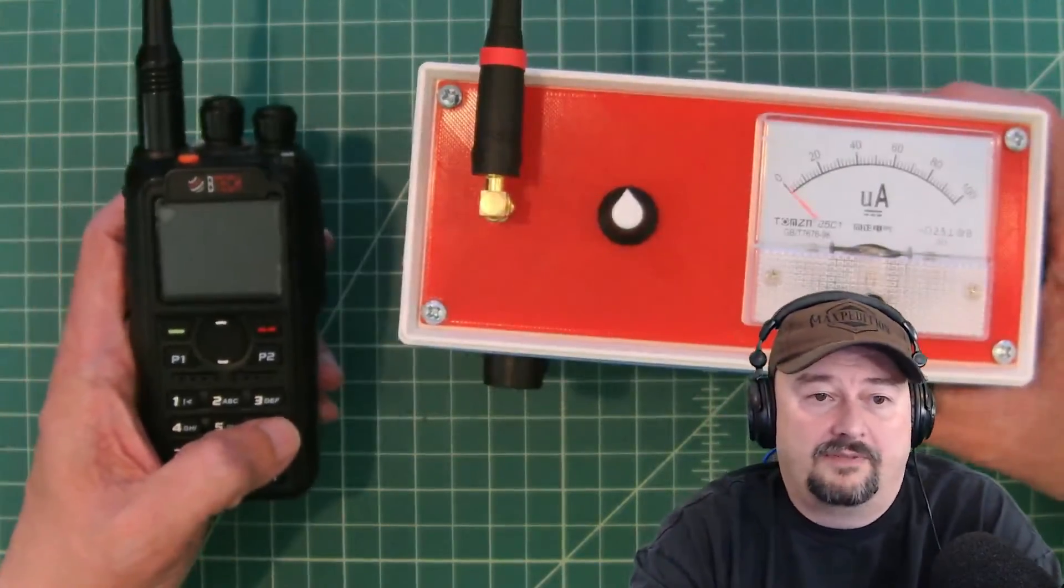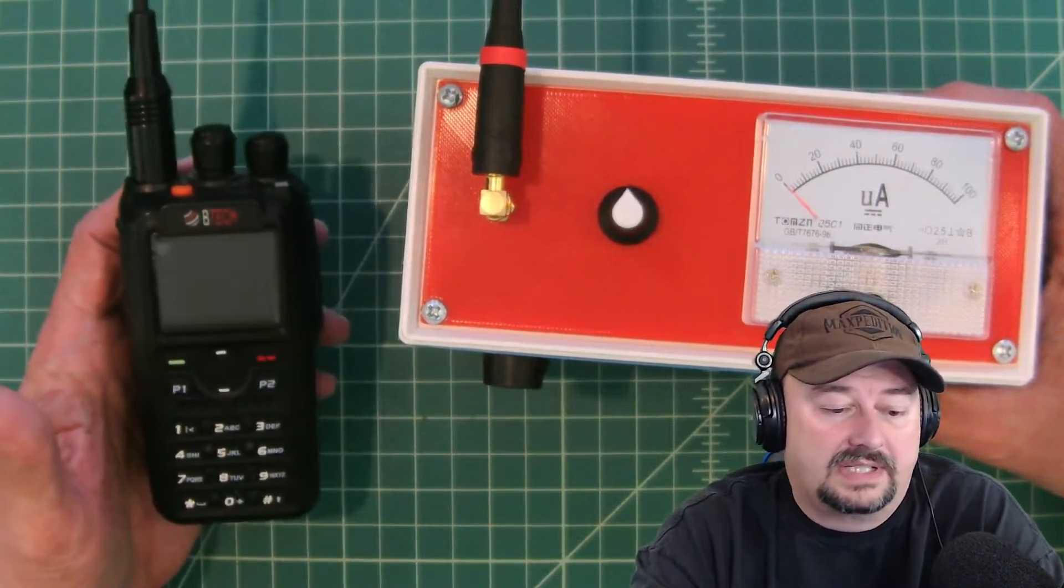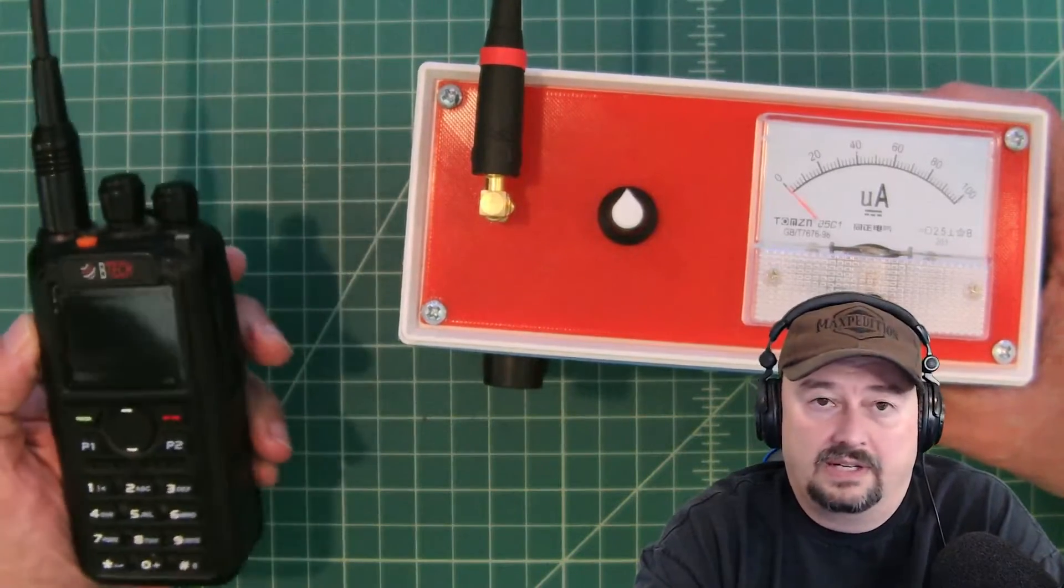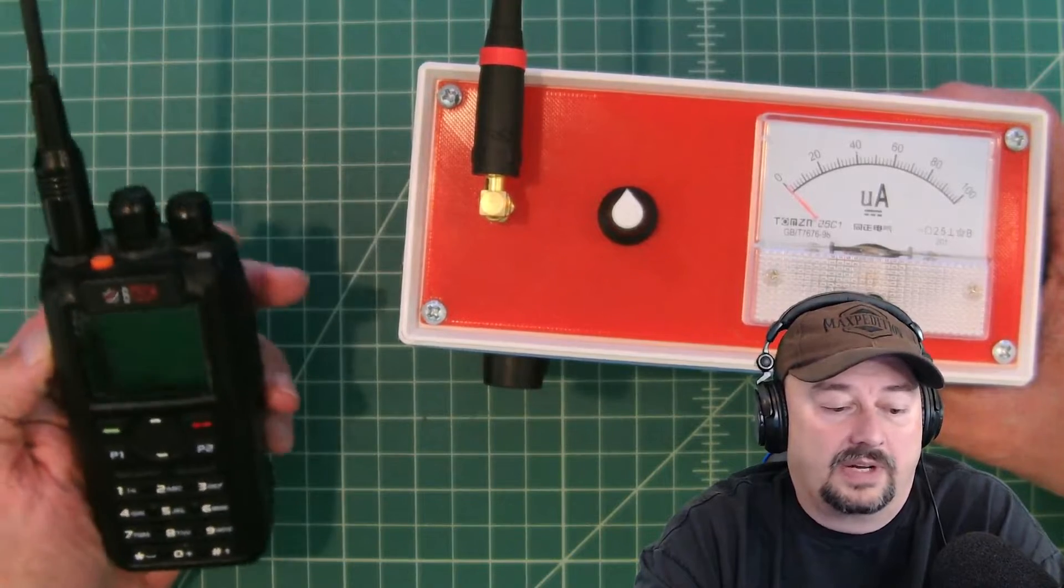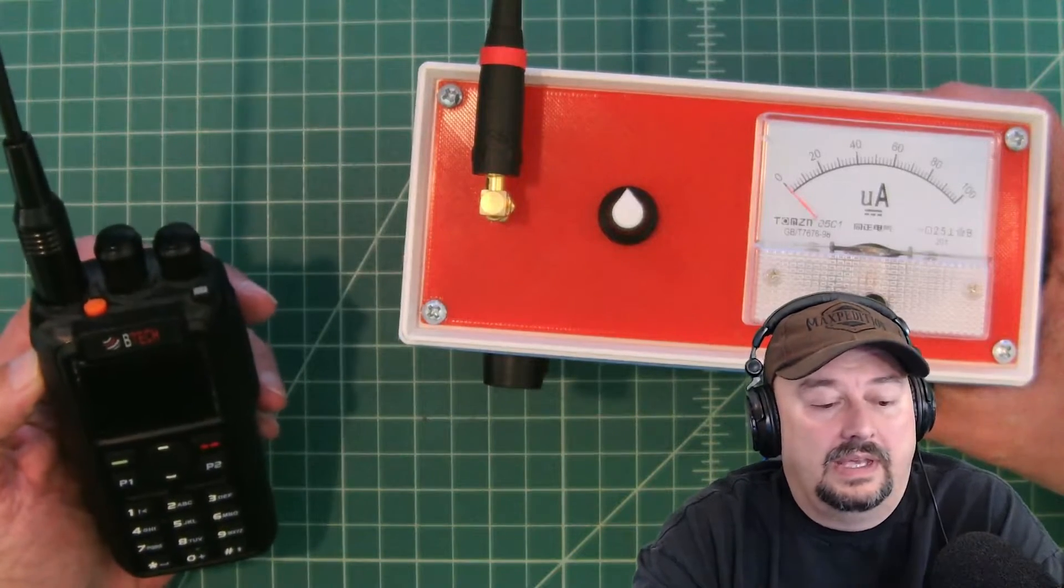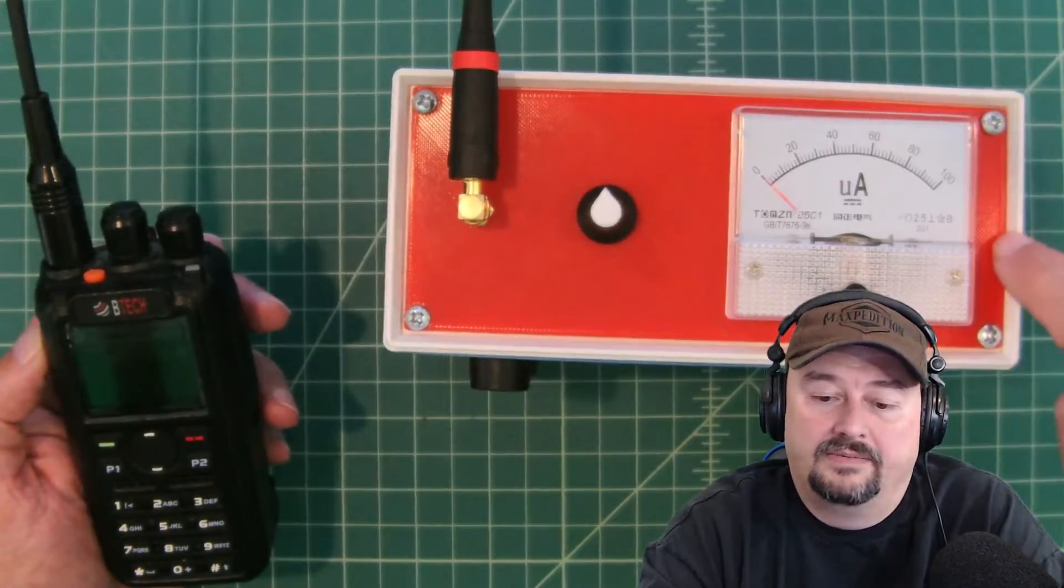So what we have here is one of my favorite radios, the BTEC DMR6X2. It's a digital and analog HT. I have it set up for analog right now and we're going to use this to test this.